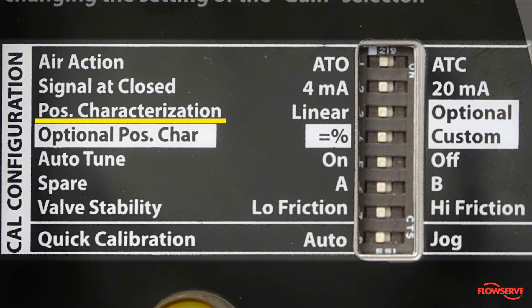The third dip switch is called positioner characterization. There are two choices: linear and optional. Linear is the standard setting for most control valves. If you enable the optional setting by moving the dip switch to the right, it will enable the next dip switch below.